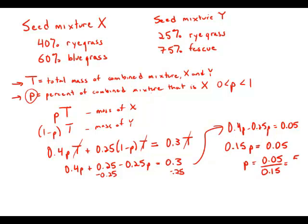Moving the decimals, P equals 0.05 divided by 0.15, that's 5 over 15, which is one third — which as a percent is 33 and a third percent. And this is exactly answer choice B.